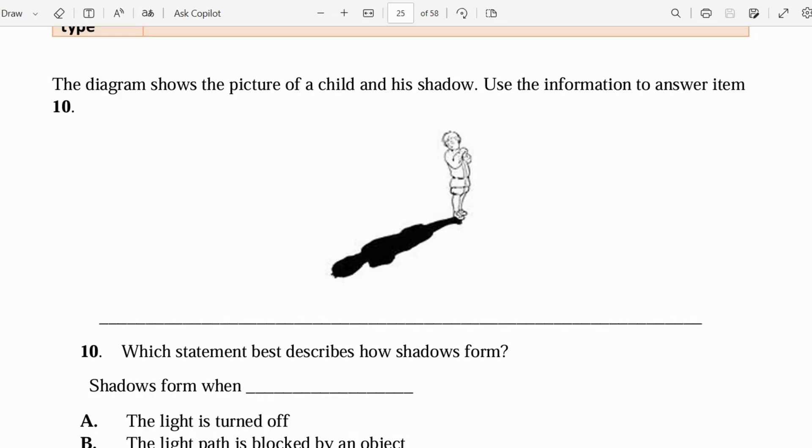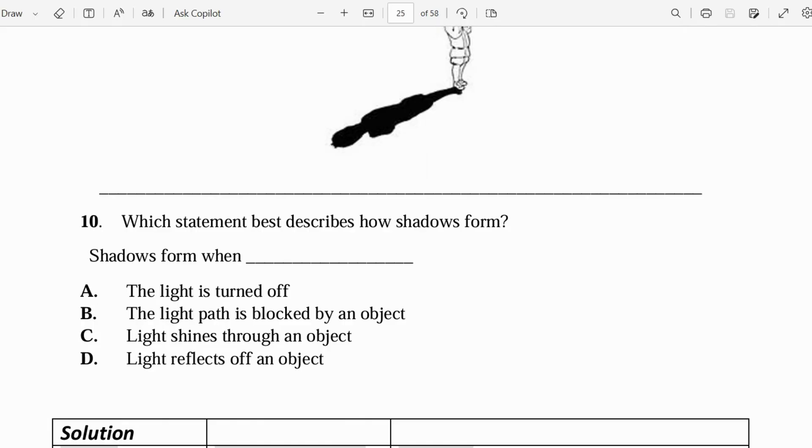Which statement describes how the shadow forms? Shadow forms when the light is turned off, the light path is blocked by an object, light shines through an object, or light reflects off an object. The correct answer is B.